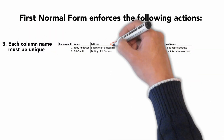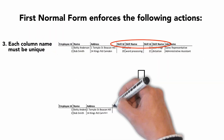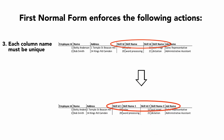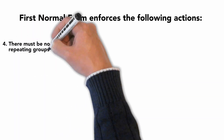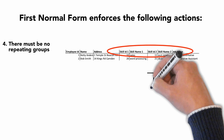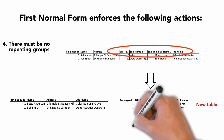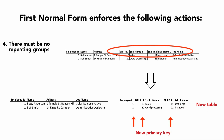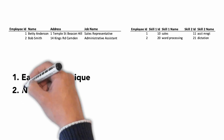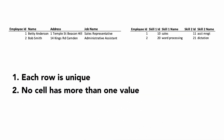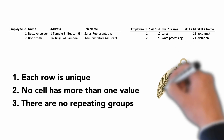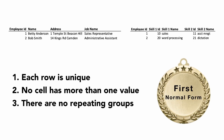It also means that each column name must be unique, and in this case we need to rename our skill columns to make them unique. And four: there must be no repeating groups. Repeating groups are removed and put into a new spreadsheet or table. Now we have two spreadsheets or tables with nice rows of data. Each is uniquely identified, each has no more than one value in each cell, and there are no repeating groups. Welcome to first normal form, but the fun doesn't stop here.